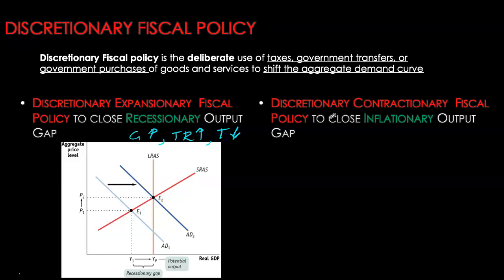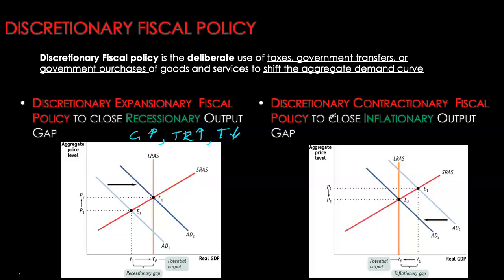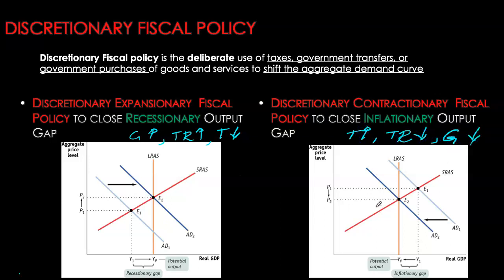In the case of inflationary output gaps, where output is actually above potential GDP, we can close the output gap by using contractionary fiscal policy, which will dampen aggregate demand, shift the AD curve to the left, and thereby close this output gap. Contractionary fiscal policy means deliberate changes — we can increase taxes, reduce transfers, or reduce government purchases of goods and services.